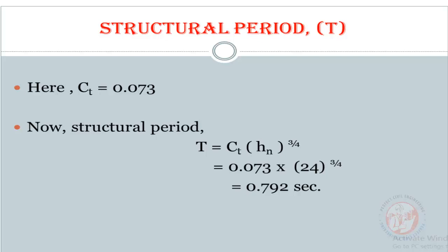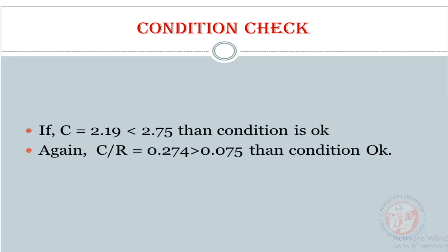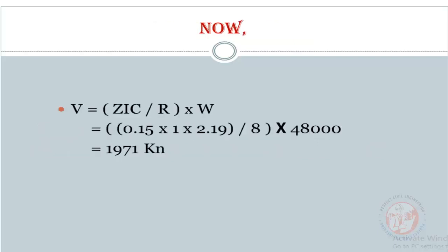Numerical coefficient C: C equals 1.25 times site coefficient divided by structural period to the power 2/3. So 1.25 S divided by T to the 2/3 equals 2.19. We have to check a condition: C equals 2.19 is greater than 2.75, and we have to take this condition.